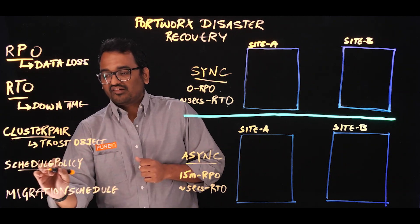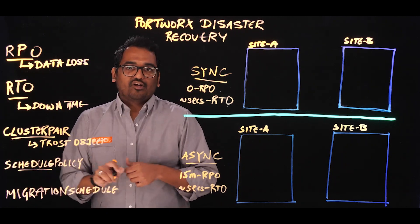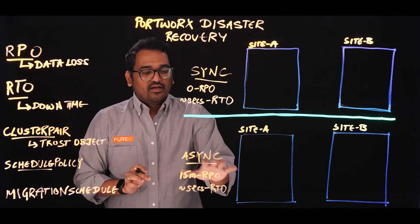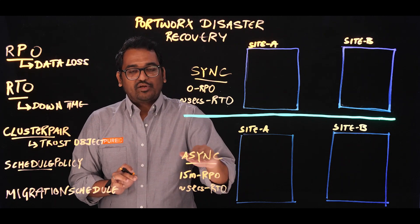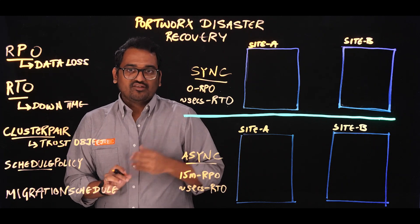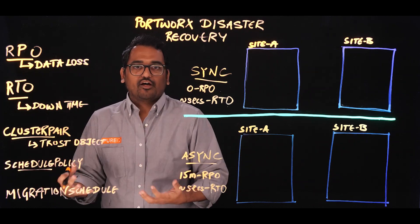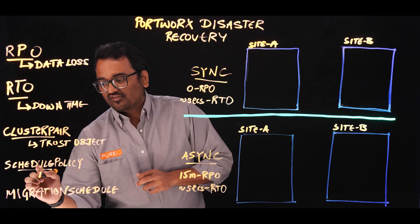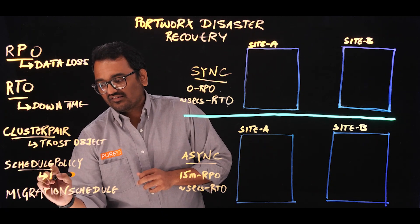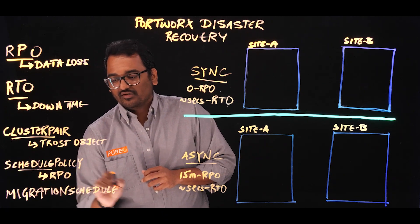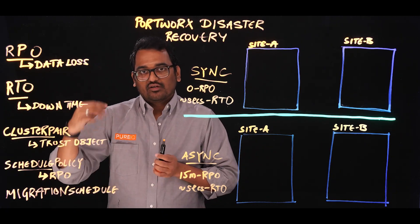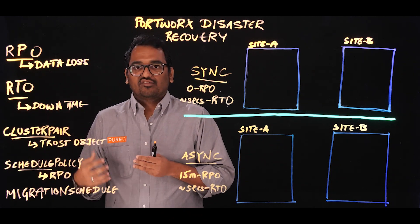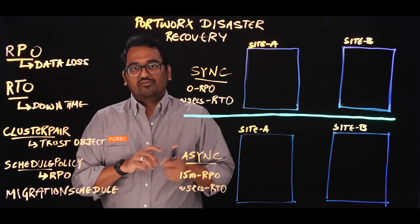Then we have schedule policy. Let's talk about schedule policy in terms of async disaster recovery. We said we need an RPO of 15 minutes — how do we tell Portworx that? We do that by using a schedule policy object. This basically translates your RPO requirement and tells your Portworx deployment on a Kubernetes cluster to copy all the objects from primary to secondary site.